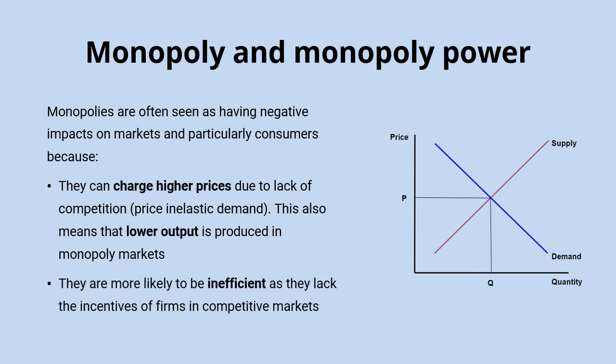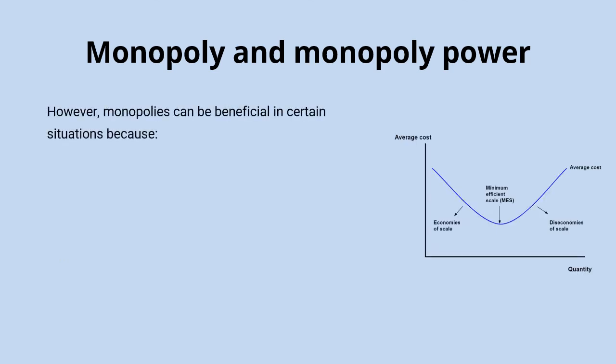Monopolist firms are also likely to be more inefficient because they don't have the same incentives as firms in competitive markets. The great thing about competition is that it constantly encourages firms to look for cost savings and drive costs down to improve efficiency, spurred on by the threat that rivals might take their market share and push them out of the market. The monopolist, or a firm with a high degree of monopoly power, simply doesn't have those same incentives, making it more likely to be inefficient.